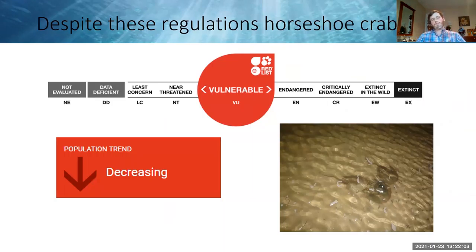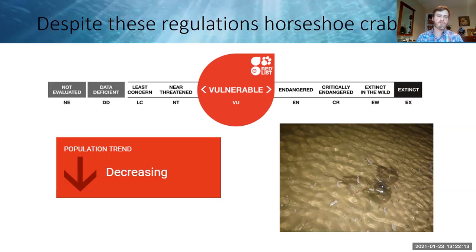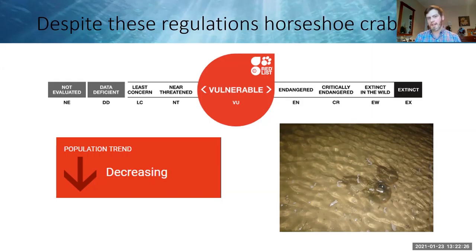Despite these regulations, horseshoe crabs in the U.S. are still considered vulnerable and decreasing according to the International Union for Conservation of Nature (IUCN), an international conservation body of scientists that assesses species status. It remains important to understand more about horseshoe crab population dynamics and movement to help improve regulatory measures and bolster their populations.